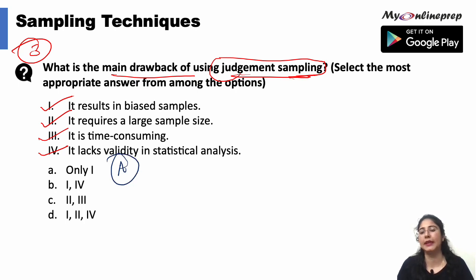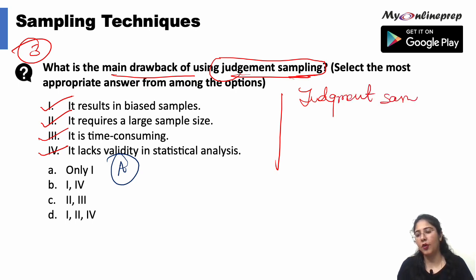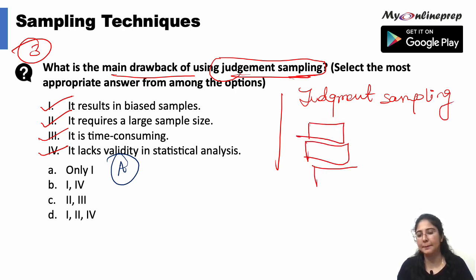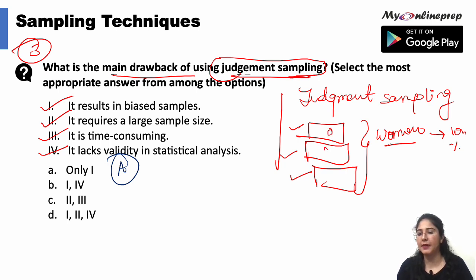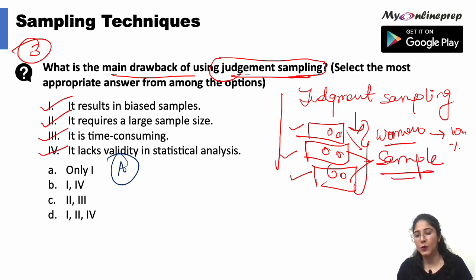Judgment sampling means, for example, if I want to study women's empowerment, I will take a section of society where women's participation rate is quite high. So I have taken those women who are working and play a good role in women's empowerment. After taking this sample, I will take a particular sub-sample. The population size was also chosen according to my preference, so the result will be biased. That's why option A is the correct answer here.